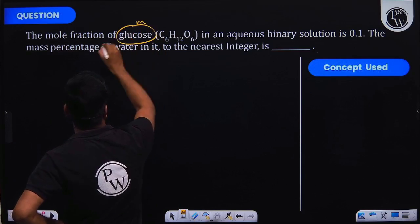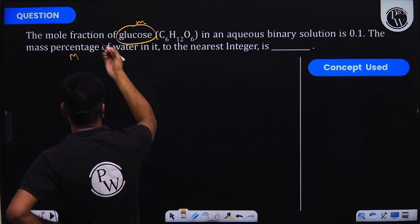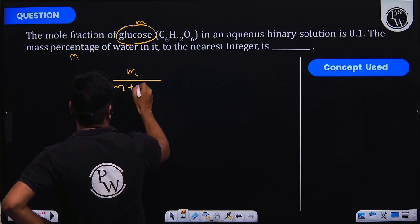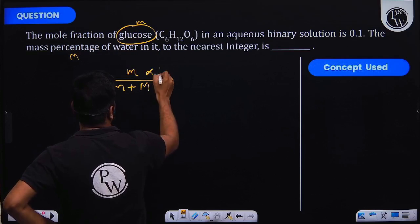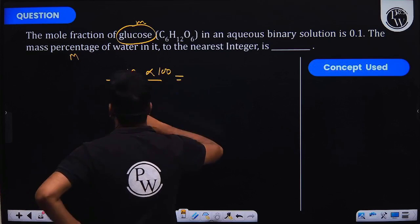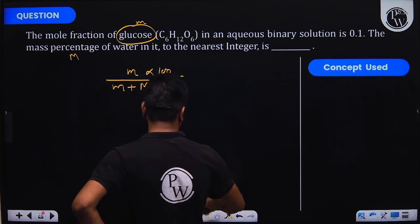We are saying the mass of glucose is small m and mass of water is capital M. So mass of glucose divided by mass of glucose plus mass of water times 100 would give us the mass percentage of glucose.